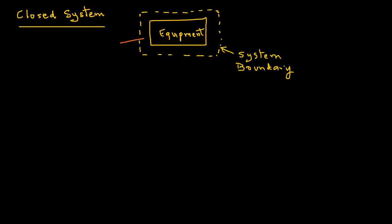So, what is a closed system? Well, a closed system, we can draw here a little block showing a piece of equipment and surround it by a boundary. So, we have a piece of equipment enclosed in a system boundary. In a closed system, energy can go through the system boundary.